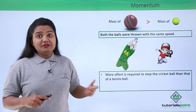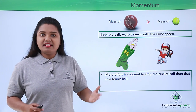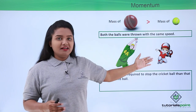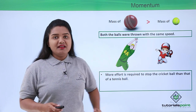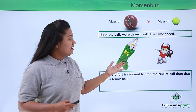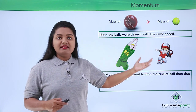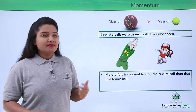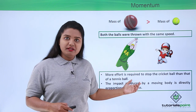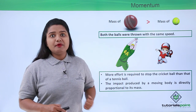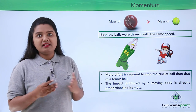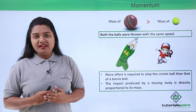In fact, we may even get hurt if we miss a catch with the cricket ball, but we will not get hurt with a tennis ball. So the impact that the cricket ball produces is greater compared to the tennis ball. We conclude that the impact produced by a moving body is directly proportional to its mass.